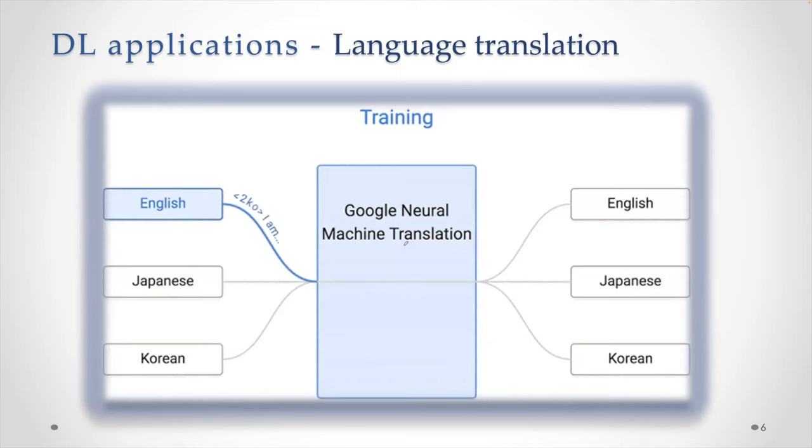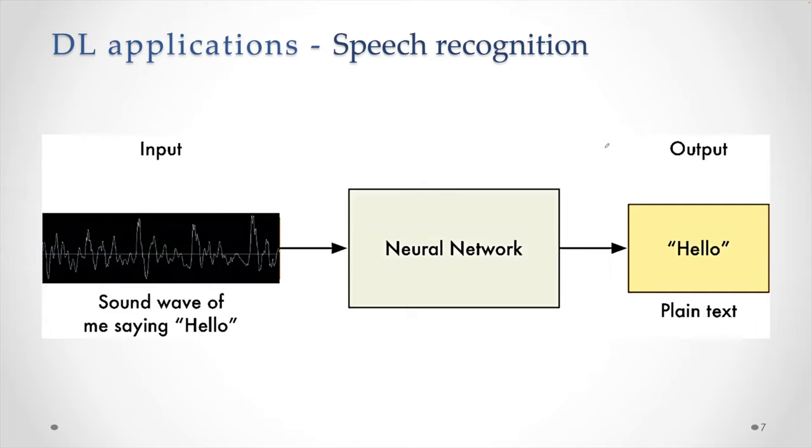Another example is speech recognition. Speech, as you know, is unstructured kind of data and that unstructured type of data through some processing or pre-processing is fed into a neural network. And then the output that you get could be in plain text.